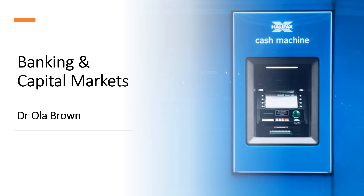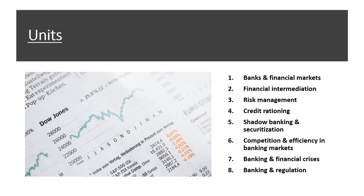Hello and welcome to Banking and Capital Markets. My name is Dr. Ola Brown and in this module I'll be going through some of the more interesting parts of the Banking and Capital Markets module. There are eight units starting with an introduction to banks and financial markets, financial intermediation, risk and risk management, credit rationing, shadow banking, competition and efficiency, banking and financial crisis, and banking and regulation.